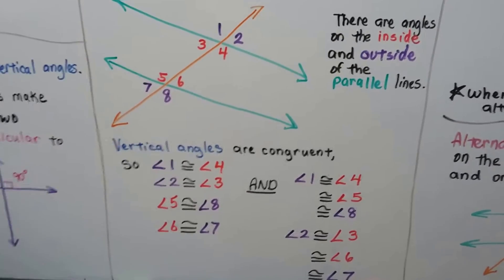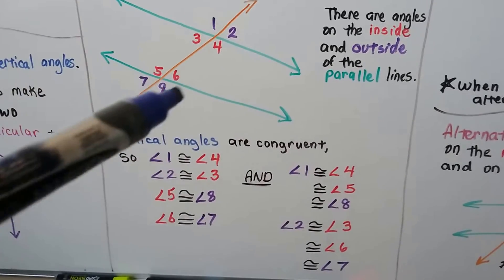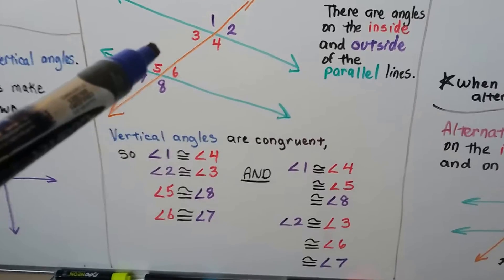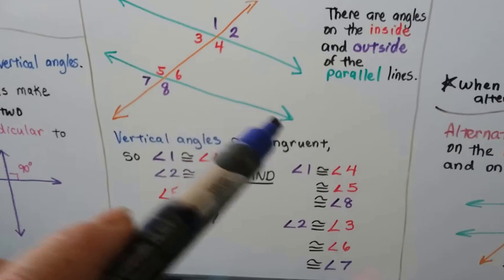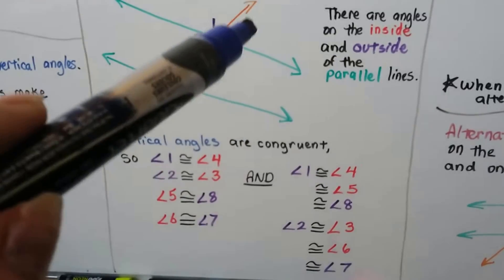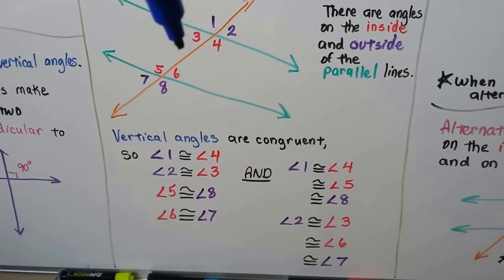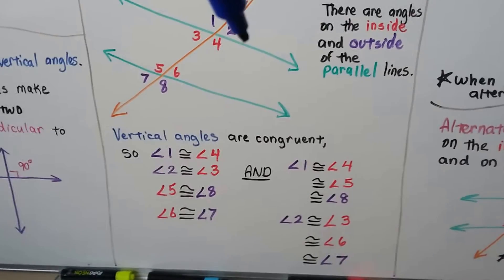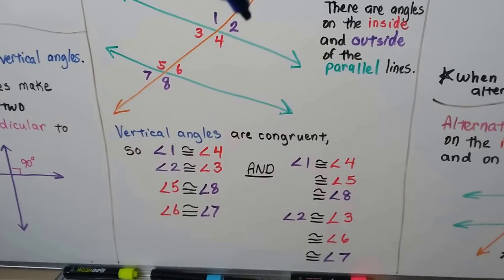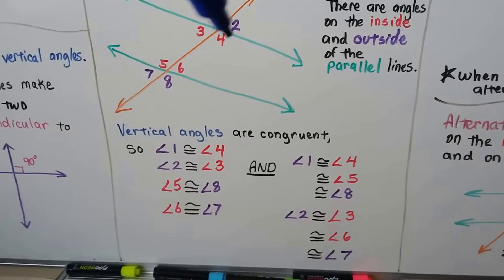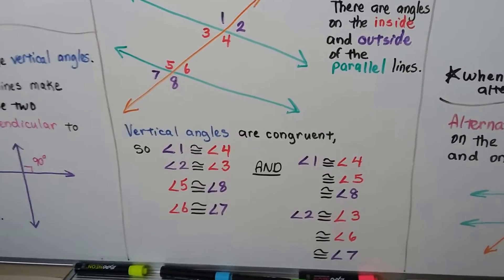Did you know that angle one is not only congruent to angle four, but it's also congruent to angle five and angle eight? That's if these are parallel lines. And angle two is congruent to angle three, and also angle six and angle seven. So angle two and angle six are going to be congruent, and angle two and angle seven would be congruent.